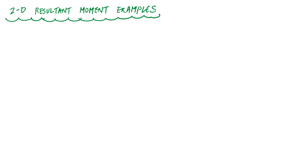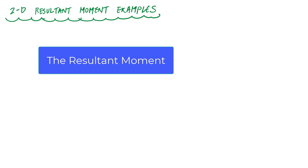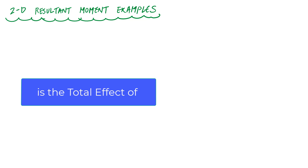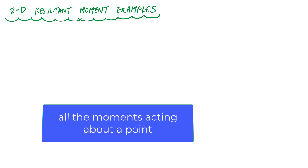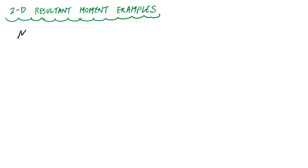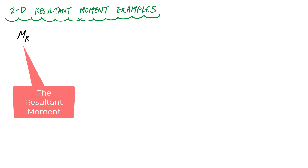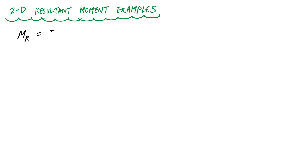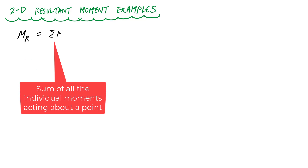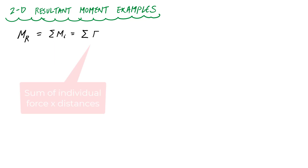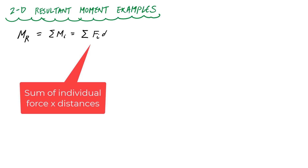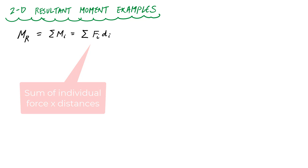Positive moments in 2D are counterclockwise and negative moments are clockwise. One of the first problem types in statics is calculating the resultant moment — the total effect of all moments acting about a point. We write it as M sub R, the sum of all the moments, which becomes the sum of all the force times distances present.